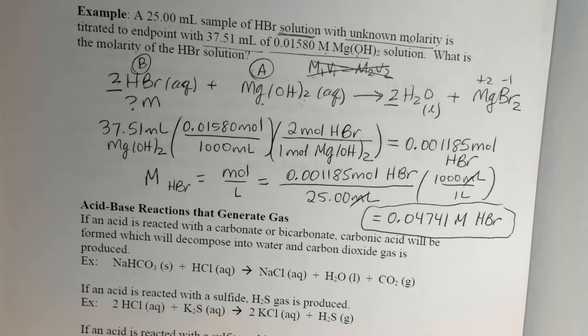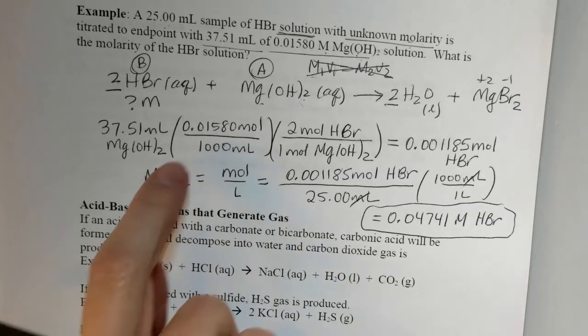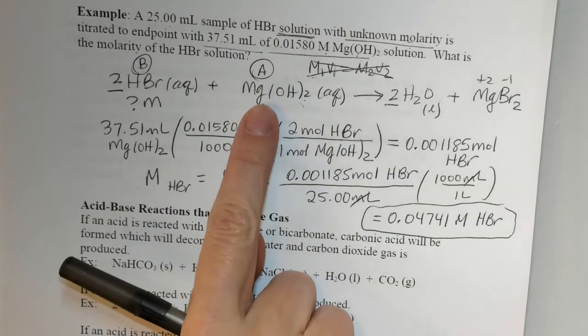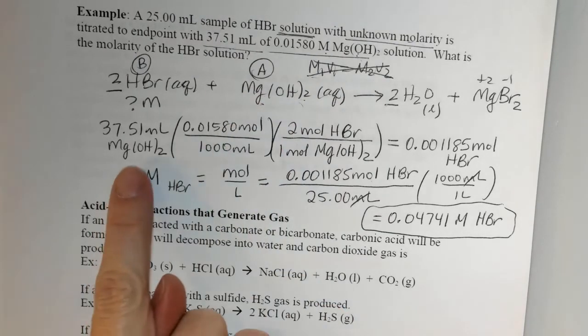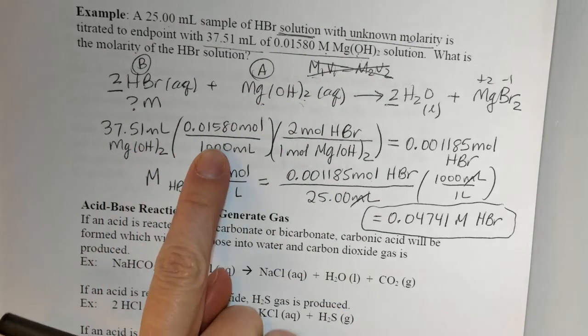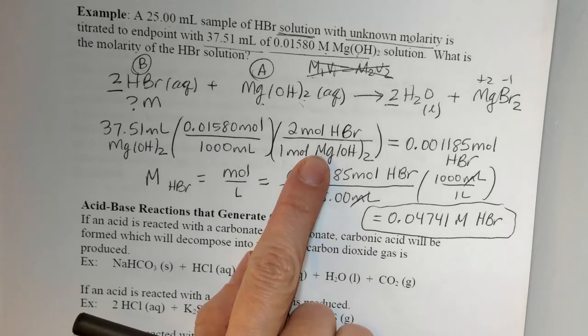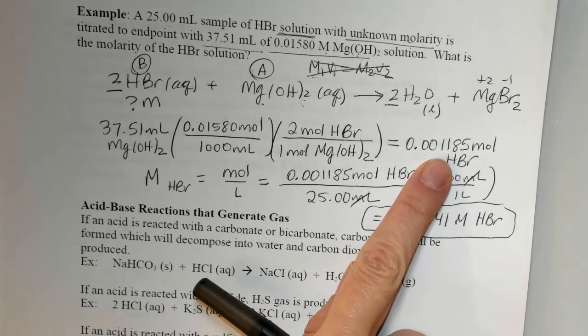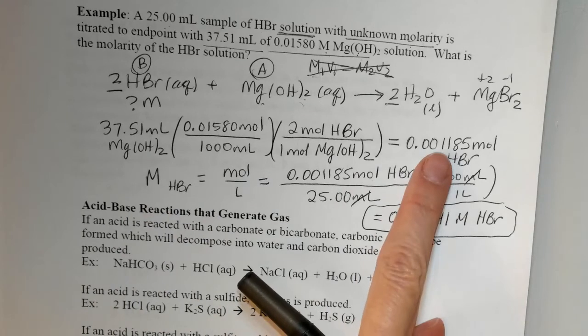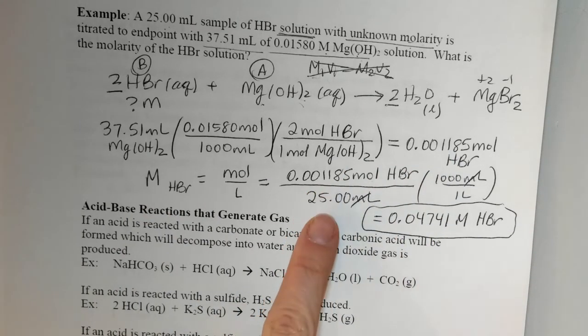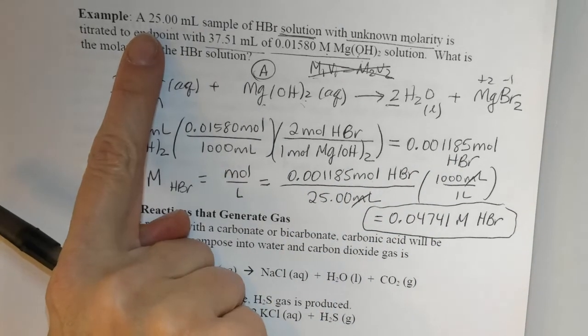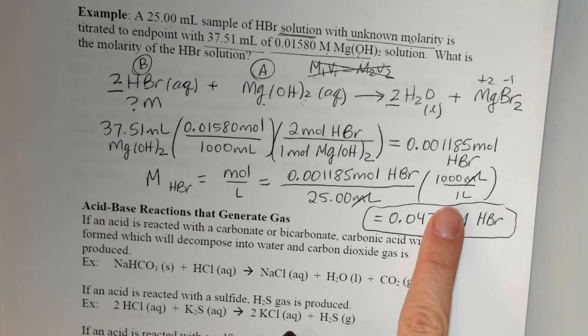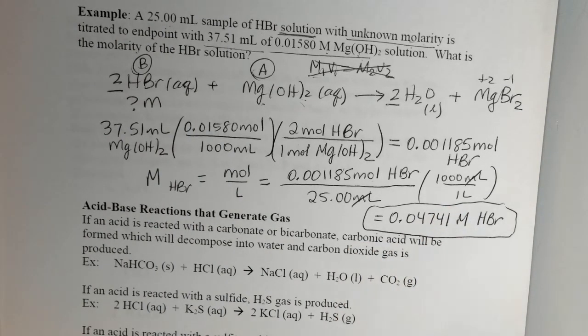So that's how you do titration problems. You have to start with your known where you know the volume, you know the molarity. Volume times molarity gets you to moles. And then include the mole ratio to get to moles of your unknown. Then to get molarity of the unknown, take that number of moles, divide it by the volume of the sample used, just making sure that volume term is in liters, and that'll get you your concentration.